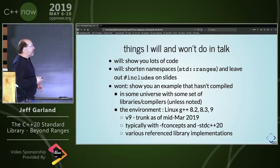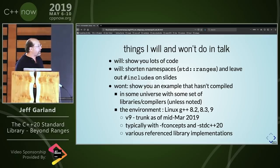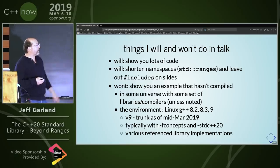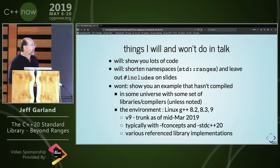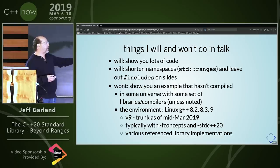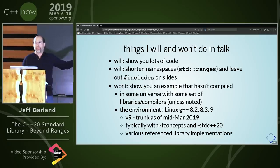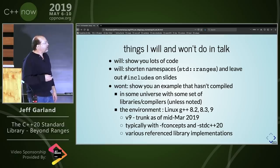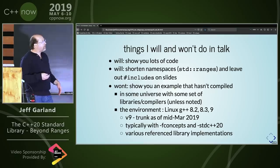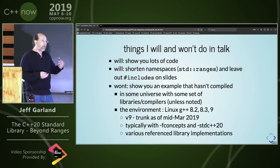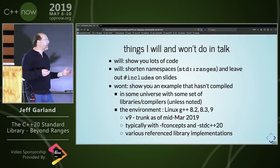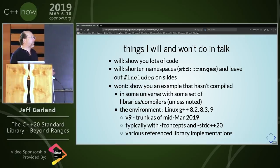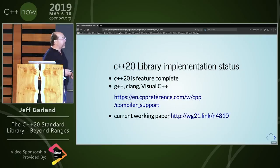The environment I mostly used for this is Linux, GCC — three different versions: V9 trunk as of mid-March 2019, normally compiling with -fconcepts and usually with C++20. For these libraries there are a lot of different GitHub repositories I had to download for reference implementations. I also spent a decent amount of time communicating with authors of these libraries, because when you start digging into the status of things, there are a few things that aren't quite there yet. So I think this is the best information available right now.